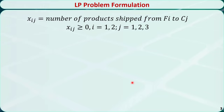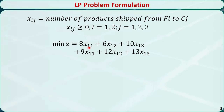For the decision variables, we define xij to be the number of products shipped from factory i to customer j. The objective function is the total cost. For example, this is the cost of shipping x11 products from factory 1 to customer 1, this is the cost of shipping x12 products from factory 1 to customer 2, and so on. We need to sum up all the cost components.